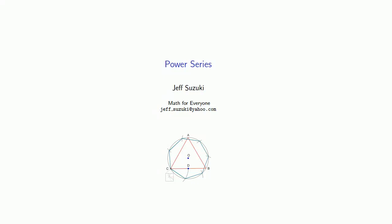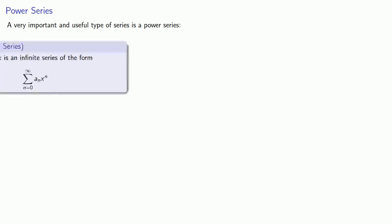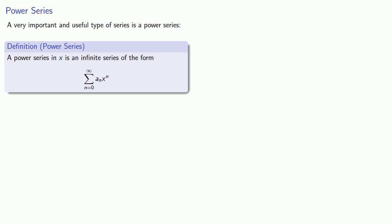So far all the series we've looked at have terms that are specific real numbers. We can generalize this concept into what's known as a power series, and these are very important and useful types of series. A power series in X is an infinite series of the form sum of terms that look like a_n times x to the power n.